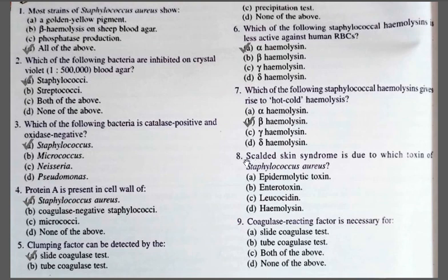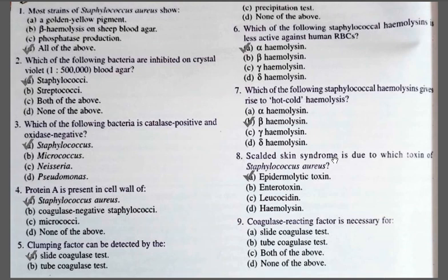Question number eight: Scalded skin syndrome is due to which toxin of Staphylococcus aureus? Options: A. Epidermolytic toxin; B. Enterotoxin; C. Leucocidin; D. Hemolysin. The correct option is A, epidermolytic toxin. This toxin causes stripping off of the uppermost layer of the skin, the epidermis. This syndrome is also called the Triple S syndrome and it is particularly seen in infants. It is also called Ritter's disease.